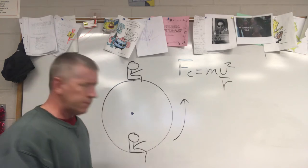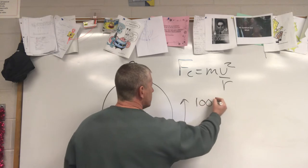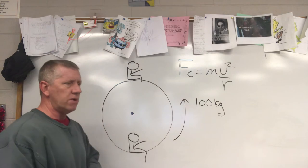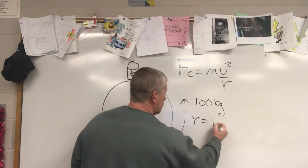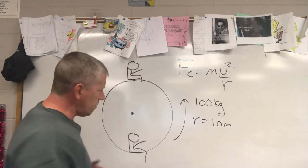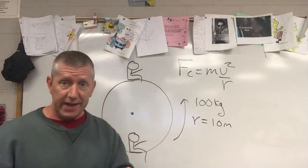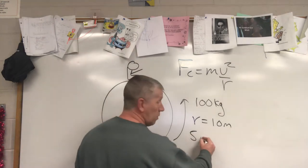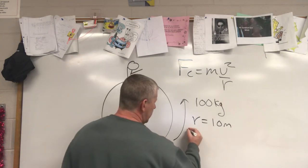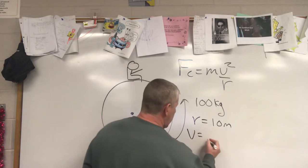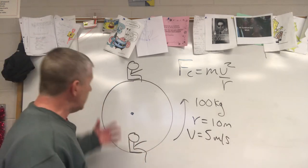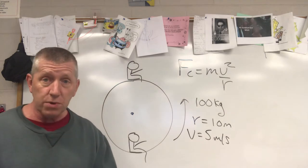Let's say we have a person with a mass of 100 kilograms on a ferris wheel with a radius of 10 meters. That's a big ferris wheel moving at 5 meters per second — actually a pretty fast ferris wheel, about a little over 10 miles per hour. So: mass = 100 kg, radius = 10 m, velocity = 5 m/s.